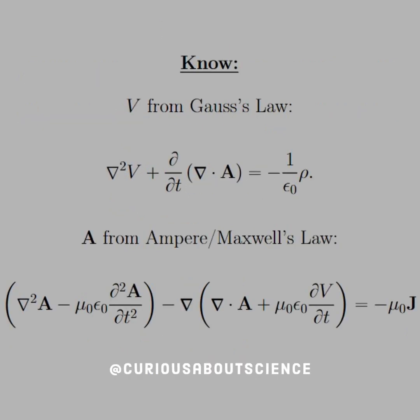But what we know is V from Gauss's law gives us del squared V plus D by DT of the divergence of A gives us the negative 1 over epsilon naught rho. And A, we get from the Ampere-Maxwell law, so we can plug that in and see a pretty gross setup that I'll just let you see, sort of reading it off.